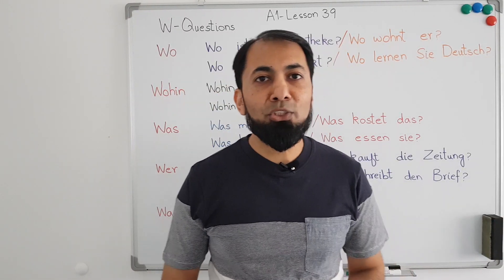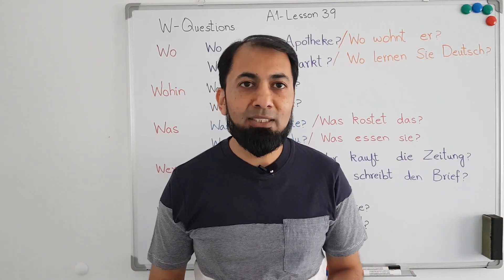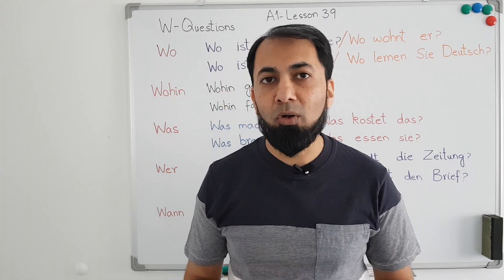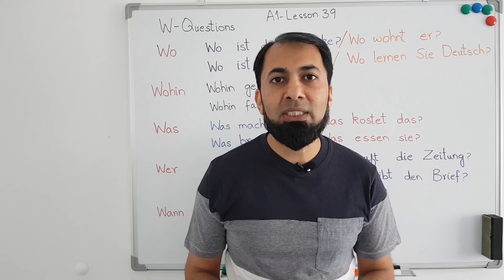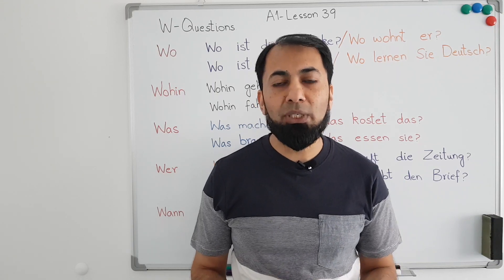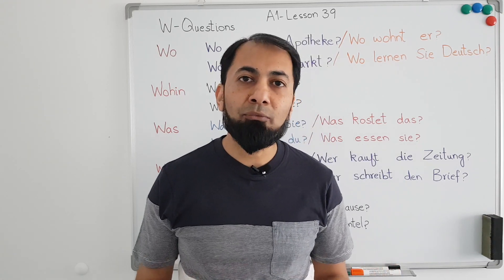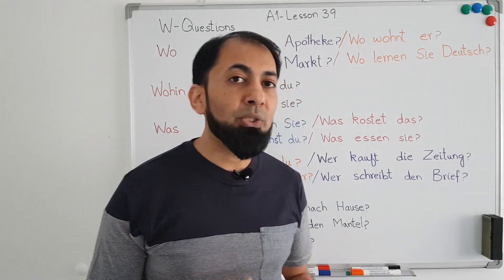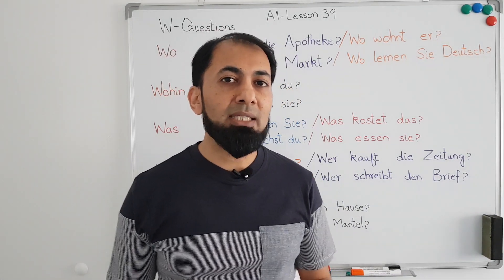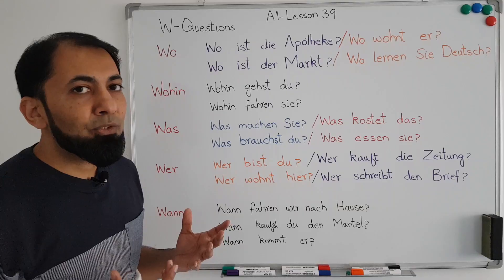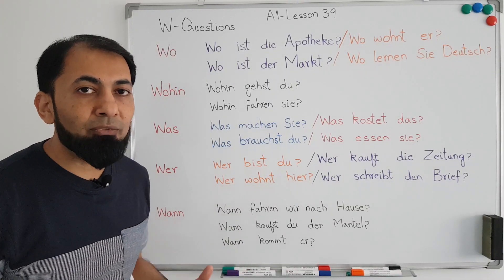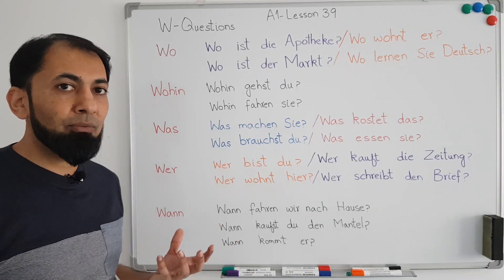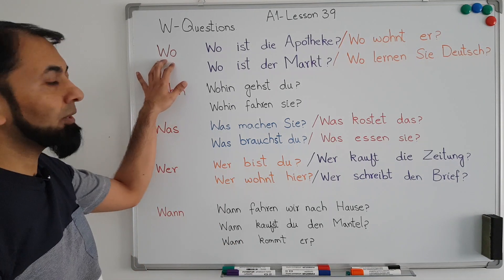Hi everyone and welcome to the Germany for Students channel. Today is the 39th lesson of the A1 level German language course, and today we are going to talk about how to make questions in German using W-question words. There are different words which start with W and they are called W-question words, and by using these W-question words we can make questions. Let's see what these W-question words are.